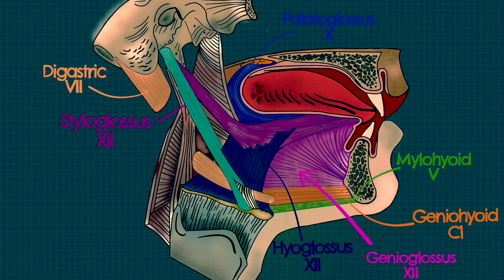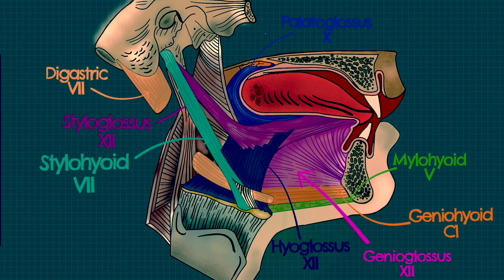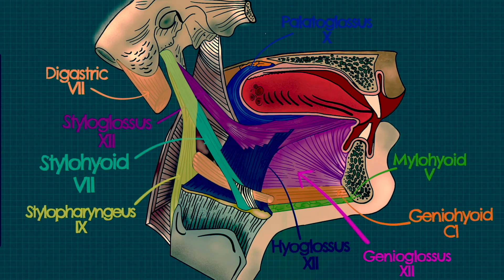The muscle coloured turquoise is the stylohyoid, and this is innervated by the facial nerve. The final muscle we are going to cover here is the stylopharyngeus, which you can see outlined in yellow. This is one of the longitudinal pharyngeal muscles, innervated by cranial nerve 9, known as the glossopharyngeal nerve.